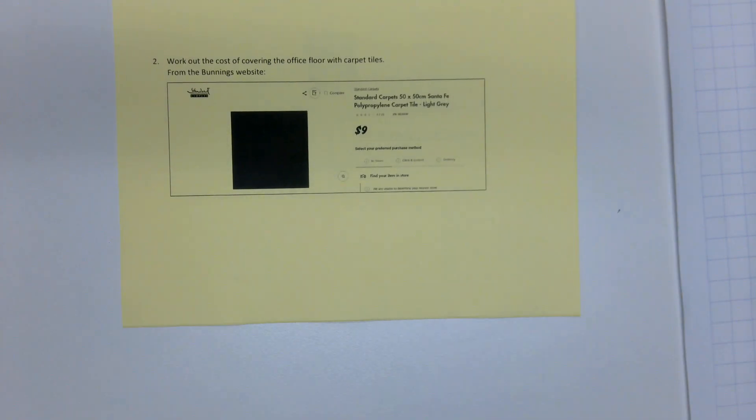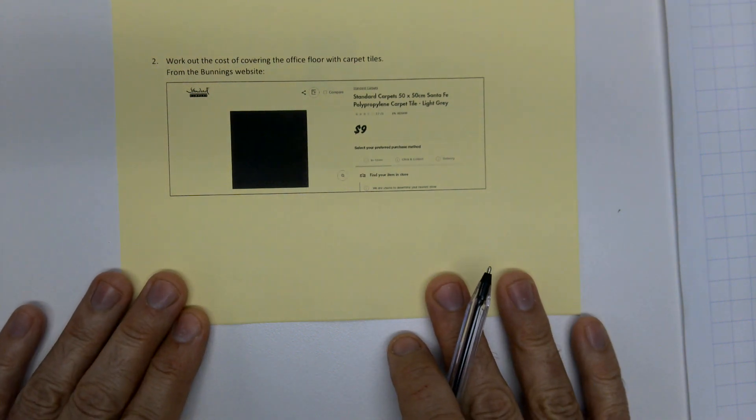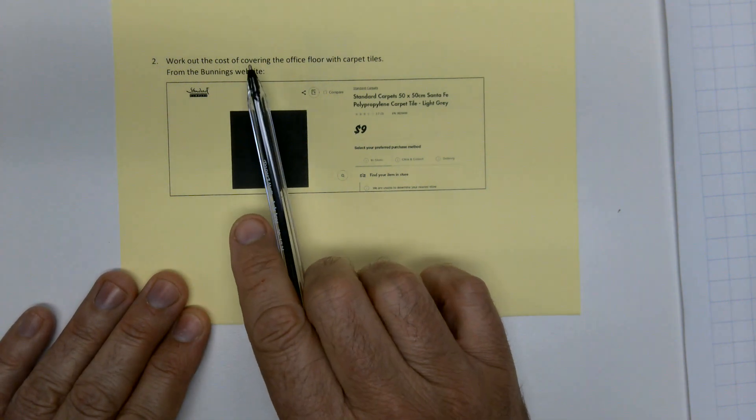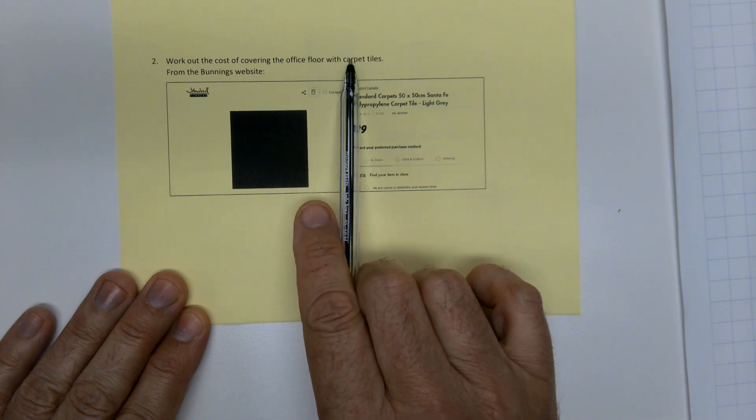Now we're going to look at how much this is going to cost. Now I've picked carpet tiles here simply because it's very readily available. You don't need to go beyond the Bunnings website for any of this stuff. Bunnings will do you well. You could do carpet tiles, carpet squares, lino tiles, whatever, but my advice is pick some tiling that is going to go down. So these are carpet tiles. So we need to know how many of these work at the cost of covering the office floor with carpet tiles.